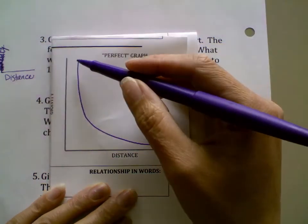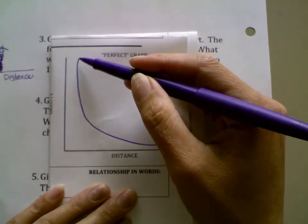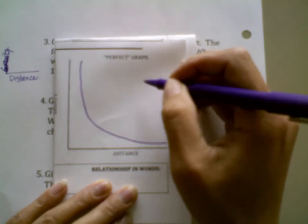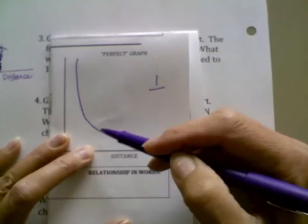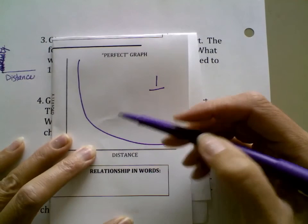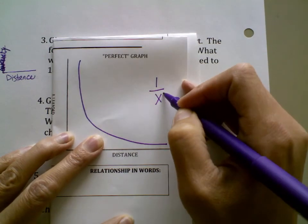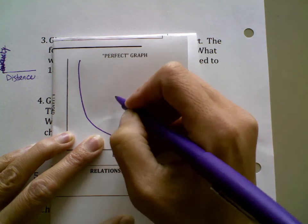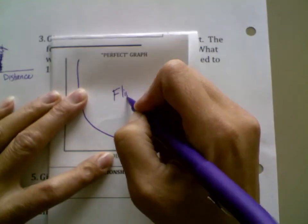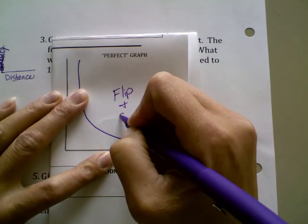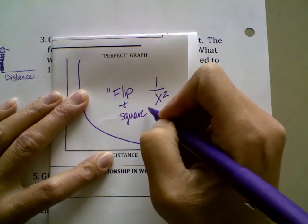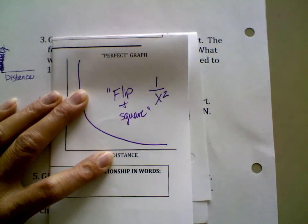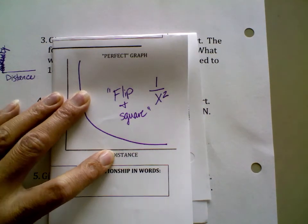One of the things to remember is in order to mathematically get this line to slope down this direction, you have to have an inverse number, and then to add that curve piece here on this side, you also have to have a square. So what we end up with for this relationship is flip and square for that relationship, or flip and square it as you'll hear me say as well.